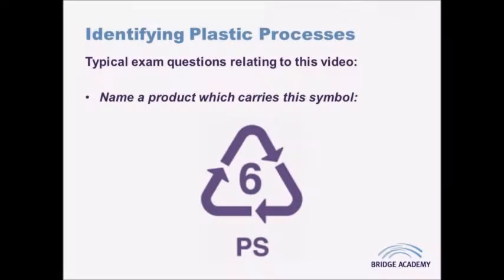This video is about identifying the process used to make a product based on a visual inspection of the product itself. We're going to be talking about four different processes: injection molding, blow molding, rotational molding, and thermoforming or vacuum forming.